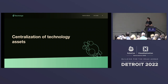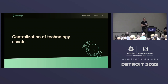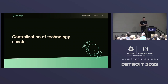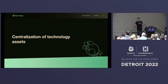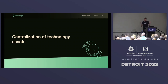Let's talk about the centralisation of technology assets. As your company grows, so does the amount of services and components that run inside your organisation. You might start off with a monolith, then it becomes microservices, and suddenly you've got a lot of stuff to manage. This is where the software catalogue comes in - it's responsible for indexing your entire organisation's technology assets.